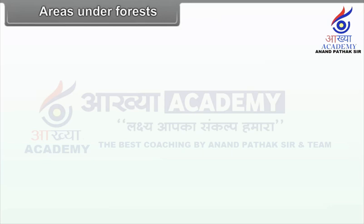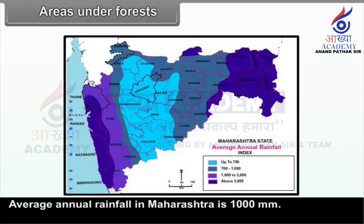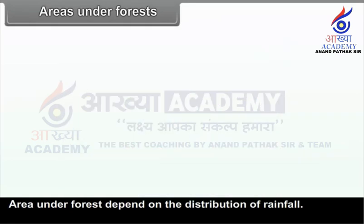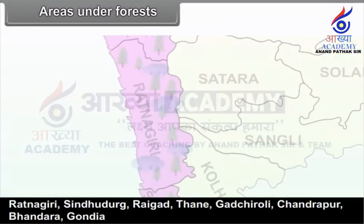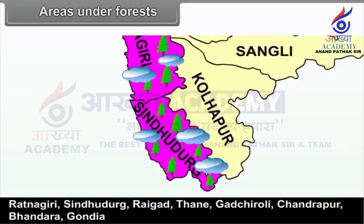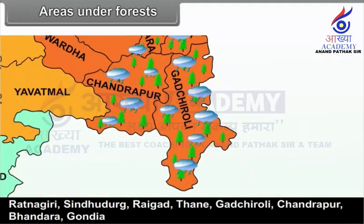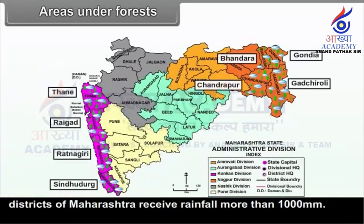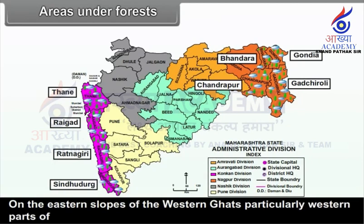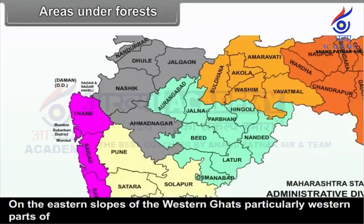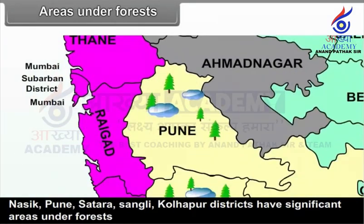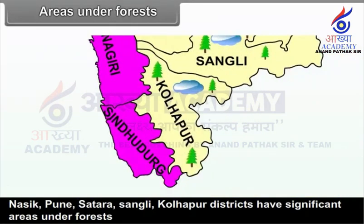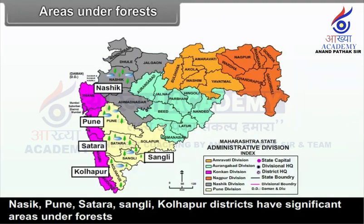Areas Under Forests. Average annual rainfall in Maharashtra is 1000 mm. Area under forests depends on the distribution of rainfall. Ratnagiri, Sindhudurg, Raigad, Thane, Gadchiroli, Chandrapur, Bhandara, and Gondiya districts of Maharashtra receive rainfall more than 1000 mm. On the eastern slopes of the Western Ghats, particularly western parts of Nashik, Pune, Satara, Sangli, and Kolhapur districts have significant areas under forests.